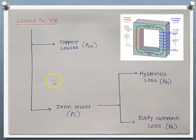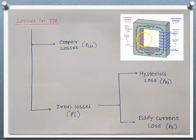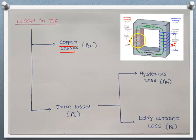Let's get started with the losses in the transformer. We have two types of losses in case of transformer. The loss which takes place in the winding resistances is known as copper loss. We have the primary winding and the secondary winding. These windings have resistance, and the power loss taking place due to that resistance is known as copper losses in the transformer.